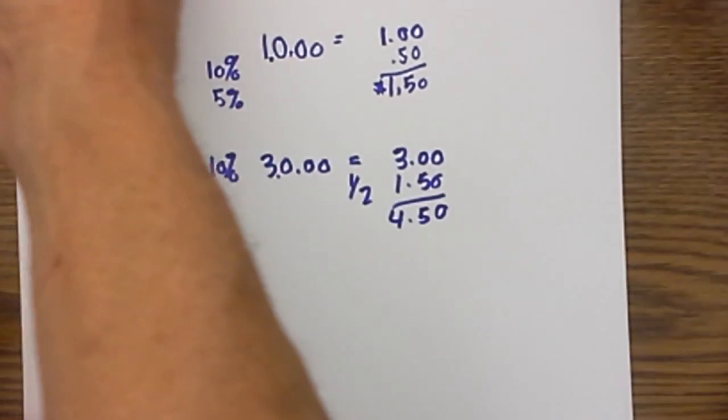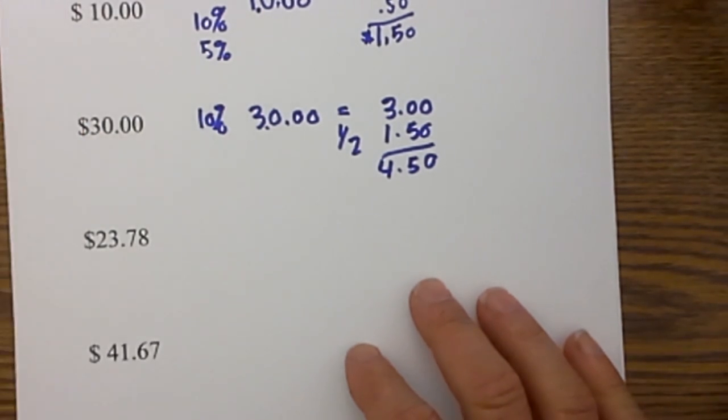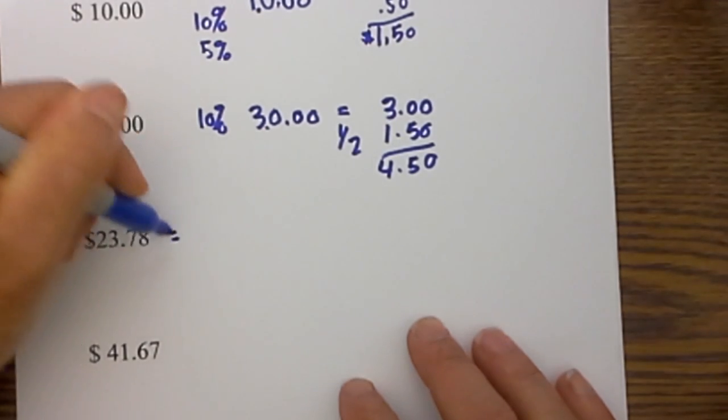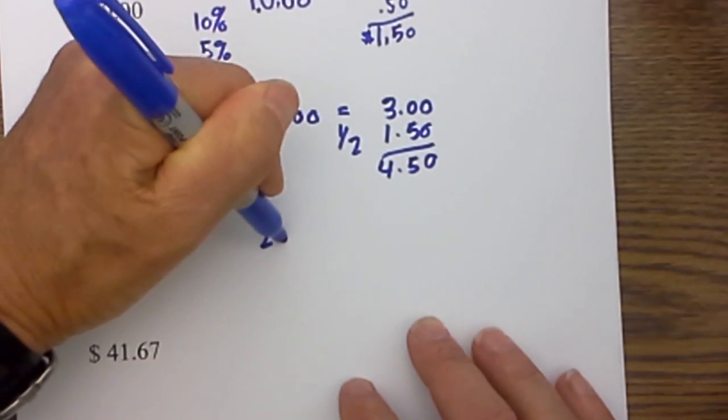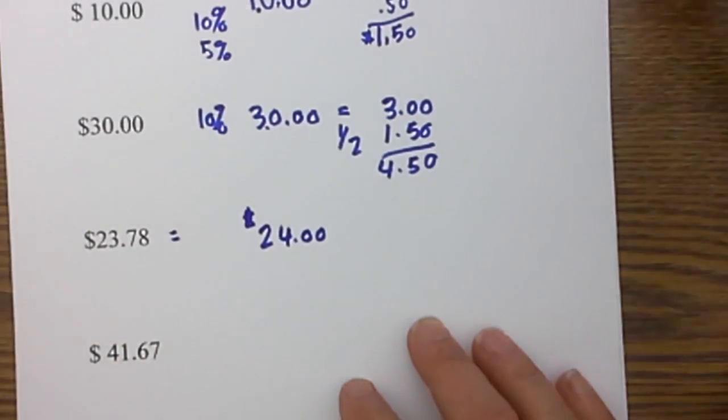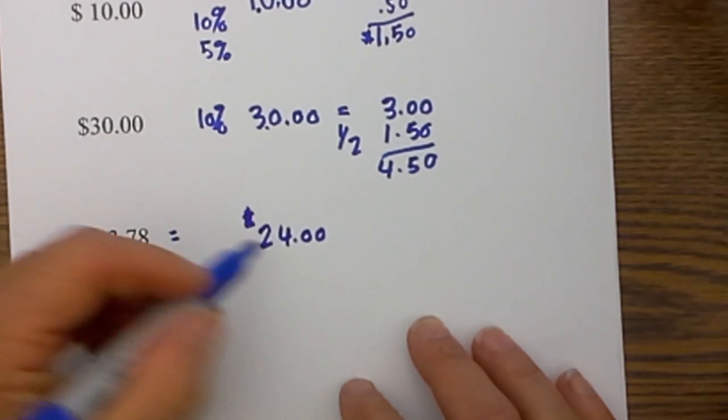Now as you know whenever you eat at a restaurant they rarely round to exact numbers. So what do you do if you have a number like $23.78? What I do there is I just go ahead and round it up to $24 and the waiter or waitress will appreciate that. I just round it to $24 and then repeat the same process.